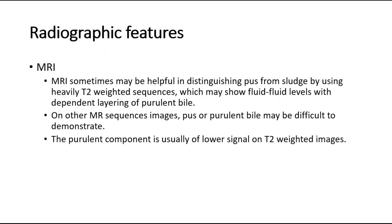MRI sometimes may be helpful in distinguishing pus from sludge by using heavily T2-weighted sequences, which may show fluid-fluid levels with dependent layering of purulent bile. On other MR sequence images, pus or purulent bile may be difficult to demonstrate. The purulent component is usually of lower signal on T2-weighted images.